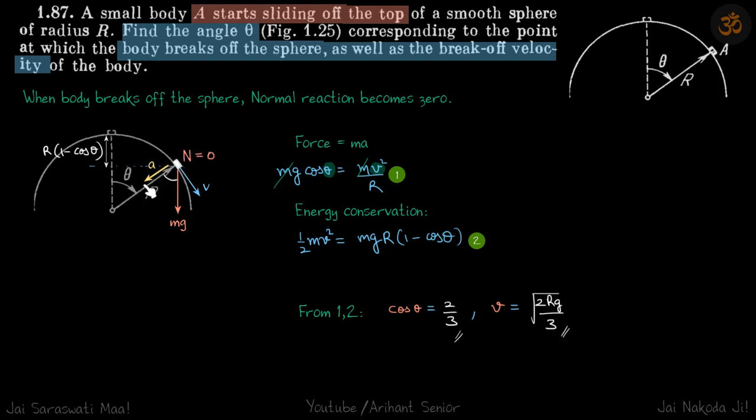So force equal to ma. So force in the normal direction is mg cos theta minus n, and n becomes zero, so it is simply mg cos theta. And the acceleration is v square by r, so this becomes mv square by r. So this is our first equation.